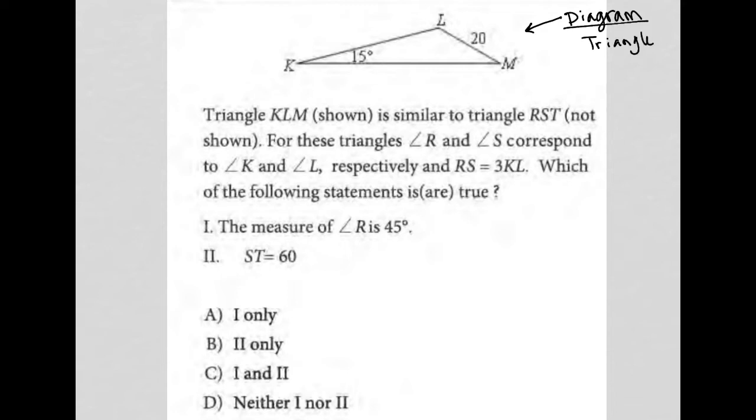We see that we know that angle K is 15 degrees. We don't know angle L. We don't know angle M. But we do know that side LM has a length of 20. So let's read the information and see what else we can figure out.